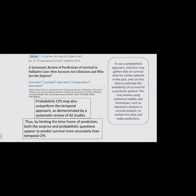The next component of CPS is the probabilistic approach, where clinicians gather data on survival rates for similar patients in the past and use it to estimate the probability of survival for a particular patient, using statistical models such as regression analysis or survival analysis. Another systematic review by Nicola White concluded that the probabilistic form of CPS may outperform the temporal approach. By limiting the time frame of prediction, both the surprise question and probabilistic approach appear to predict survival more accurately than the temporal approach.